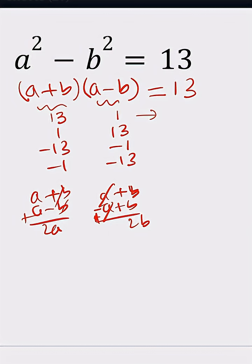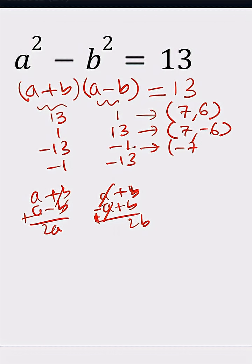13 plus 1 is 14, half of that is 7, so a is 7. Their difference is 12, so b is 6. You can also get b from the other pair: if you add and divide by 2 you get 7, but this time b is negative 6. For negative 13 and negative 1, their sum is negative 14, so a is negative 7 and b is 6. And from negative 1 and negative 13, you get negative 7 with a positive 6. So there are four solutions for this Diophantine equation, and this is it. Bye bye.